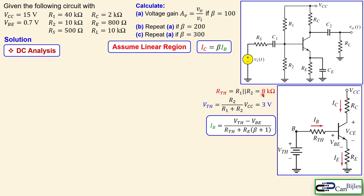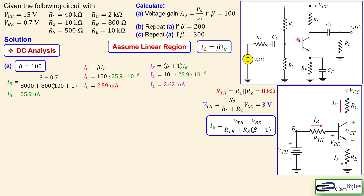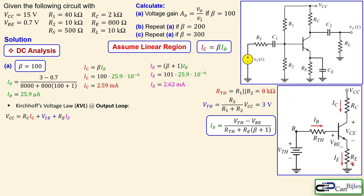For beta equal to 100, substituting gives IB equal to 25.9 microamps. Using the linear region formula, the collector current and emitter current follow. Now with the DC currents known, we apply Kirchhoff's voltage law at the output loop to find VCE: VCC equals RC times IC plus VCE plus RE times IE. Solving for VCE gives 7.73 volts. We now have all DC quantities to continue.